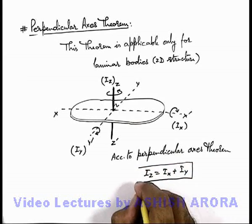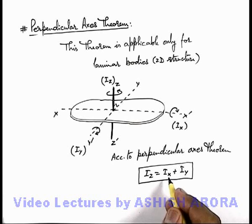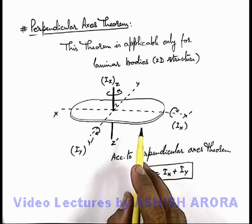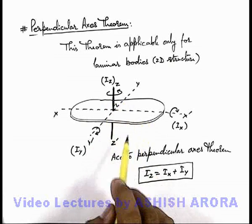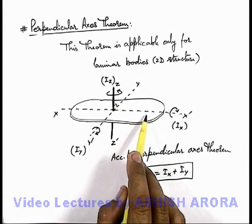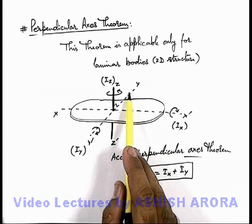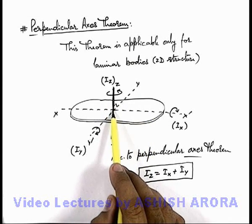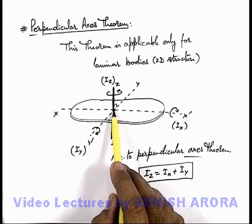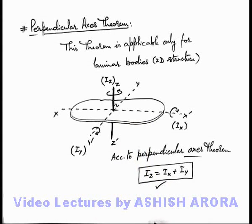This is the expression of the perpendicular axis theorem, by which we can relate the moment of inertia for a laminar or two-dimensional body. The theorem states that the sum of moments of inertia about the two perpendicular axes lying in the plane of the body equals the moment of inertia about the third axis perpendicular to the plane, passing through their point of intersection.